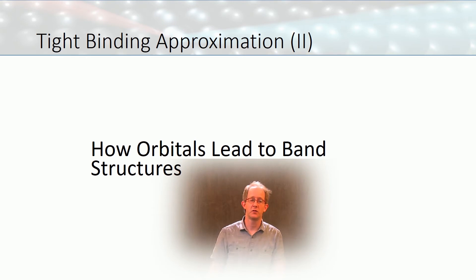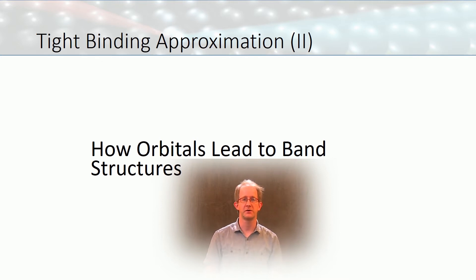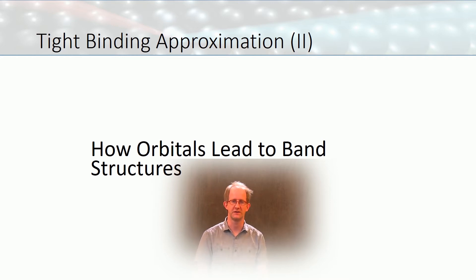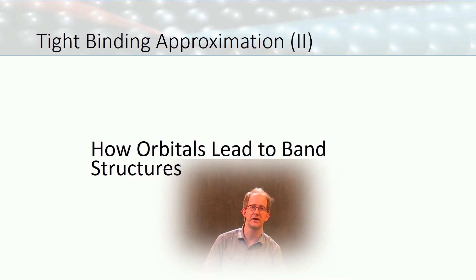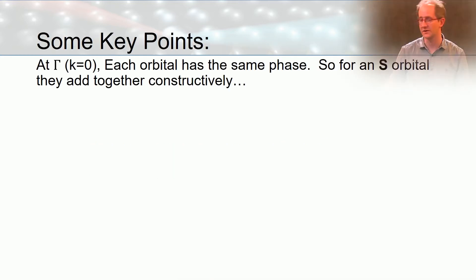Hi everyone and welcome to our second video in our series of explaining solid-state physics in terms more natural to a chemist. Today we're continuing our discussion of the tight binding approximation, which uses an orbital approach to discuss band structures and wave functions in solid-state physics. The topic of this lecture is how orbitals lead to band structure, moving beyond the s-type orbitals we covered last time. Let's review some key facts from the last lecture.